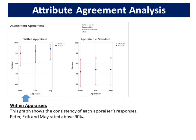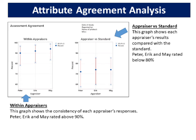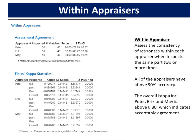If you have multiple trials, Minitab displays the within appraisers graph. The within appraisers graph shows the consistency of each appraiser's ratings. The blue circle is the actual percentage matched; the red line is the 95% confidence interval for percentage matched. The graph shows that Peter, Eric and May rated above 90%. If you specify a reference value for each part, Minitab displays the appraiser versus standard graph. This graph shows each appraiser's results compared with the standard. Peter, Eric and May rated below 80%. Within appraiser accuracy: all appraisers have above 90% accuracy. The overall kappa for Peter, Eric and May is above 0.80, which indicates acceptable agreement.